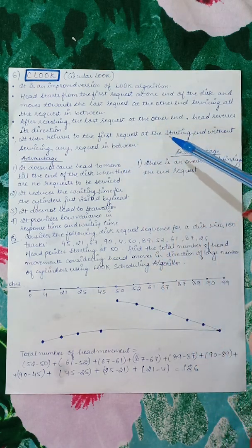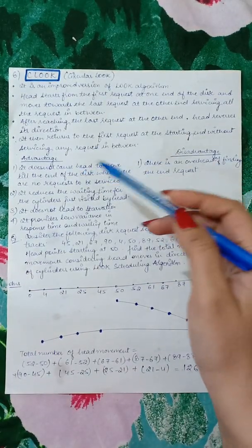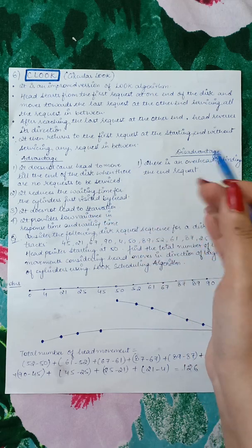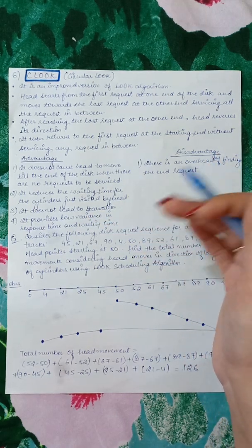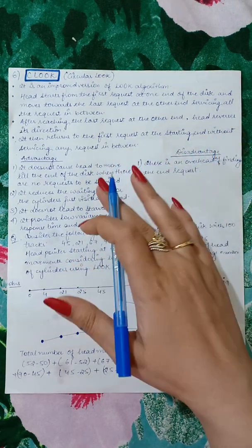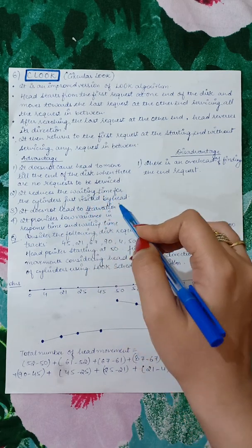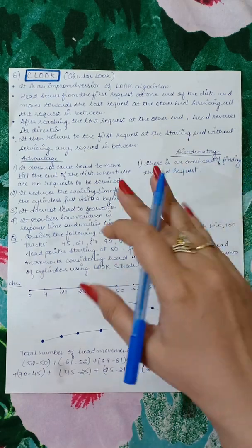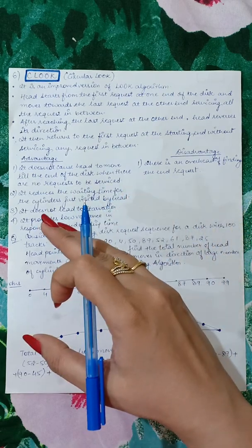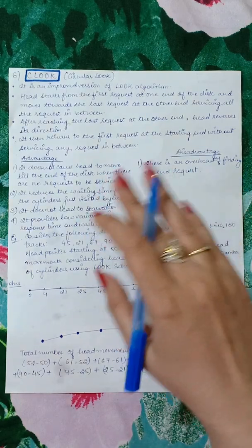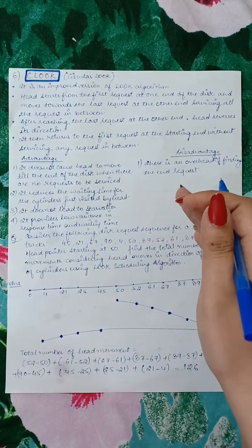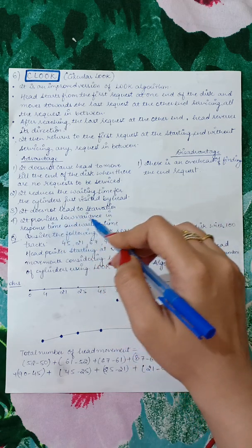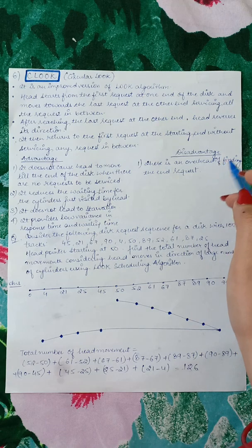It then returns to the first request at the starting end without servicing any request in between. The advantages are: it does not cause the head to move till the end of the disk where there are no requests to be serviced. In SCAN algorithms, we have to move towards the end of the disk. Secondly, it reduces the waiting time for cylinders just visited by the head, because after serving in one direction, when the head movement is in reverse direction, it is not servicing any requests. It does not lead to starvation and provides low variance in response time and waiting time.